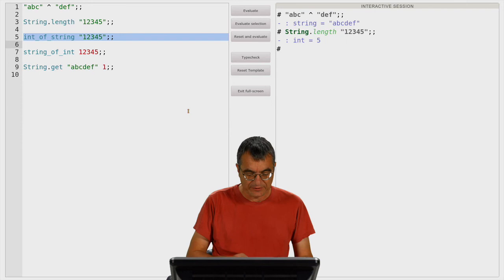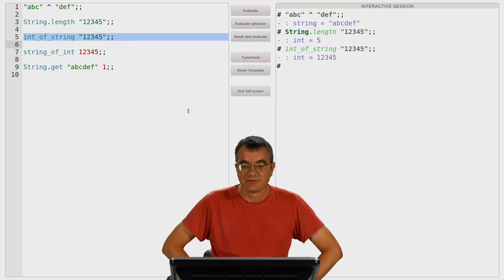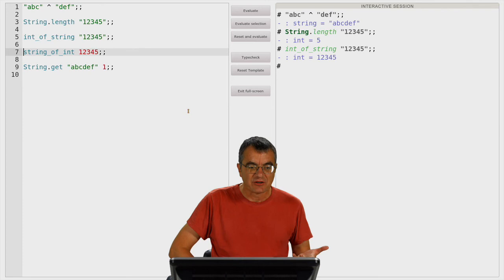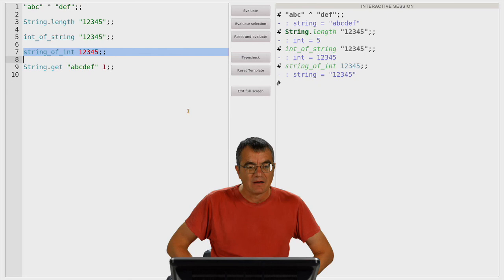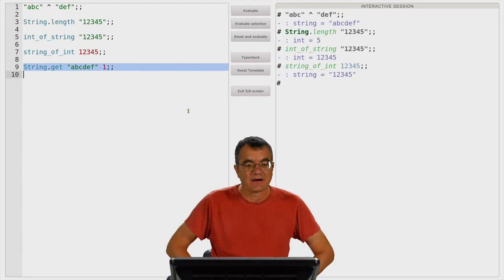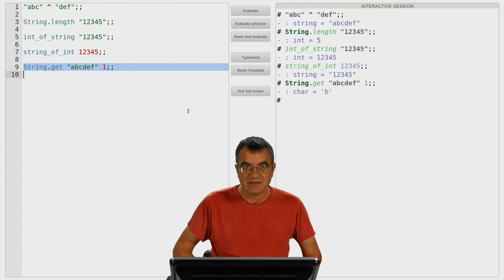We might also convert into the other direction, so taking an integer value and convert it into a string gives us a string. And we might also try to obtain a character from a string at a particular position, like in our last example, we take the string ABCDEF and ask for the character at position 1, which is, of course, B, since A would be at position number 0, and we find at position number 1 the character B.